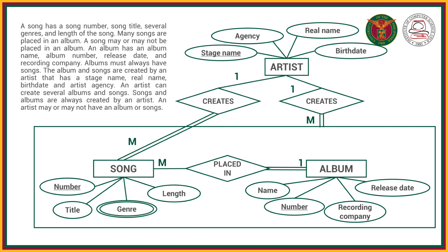This might look like a very tricky diagram, so let's break it down. We have three entities: song, album, and artist. For attributes — starting with song: number as primary key, title, multiple genres, and length. For entity album: name, number as key attribute, recording company, and release date. For artist: stage name as primary key, agency, real name, and birthdate.